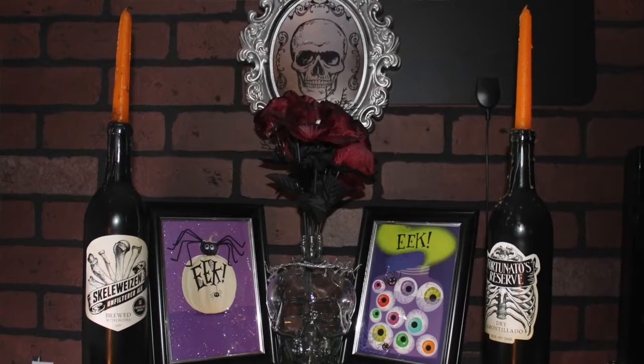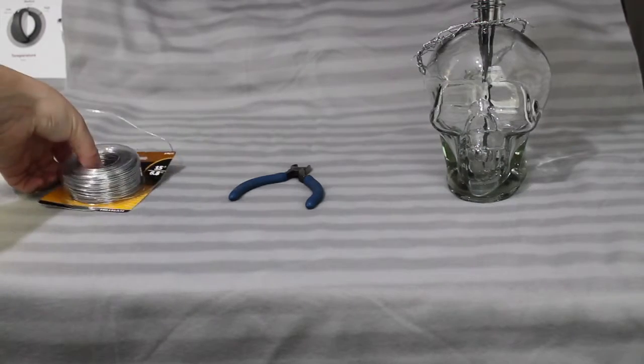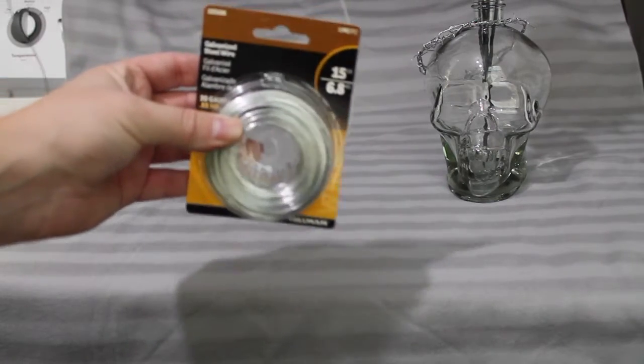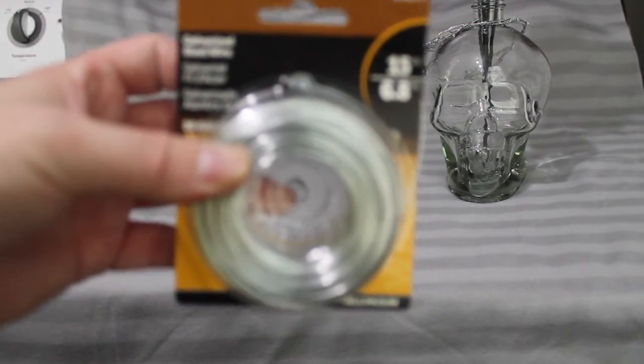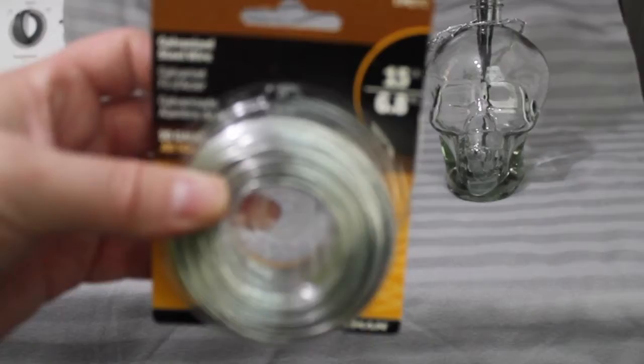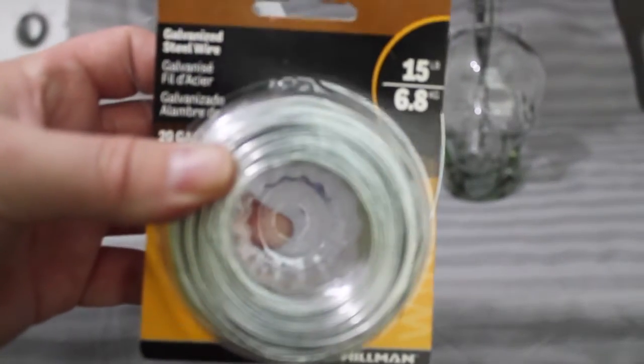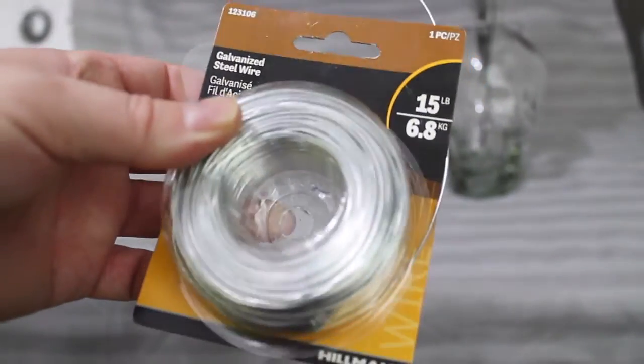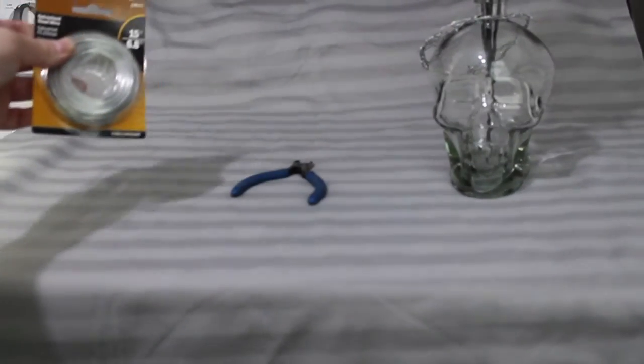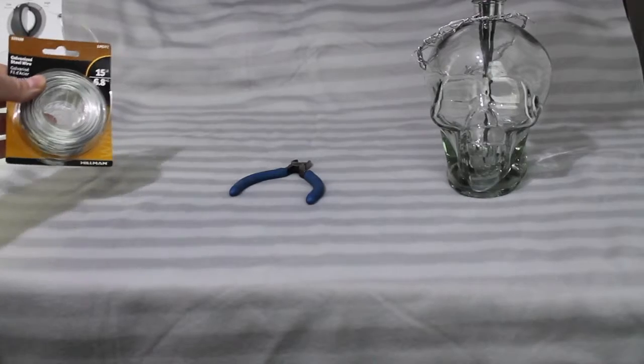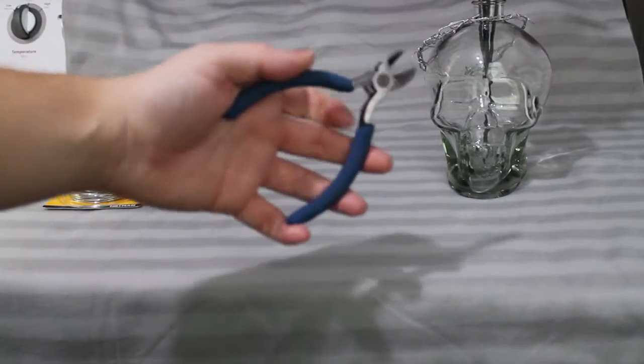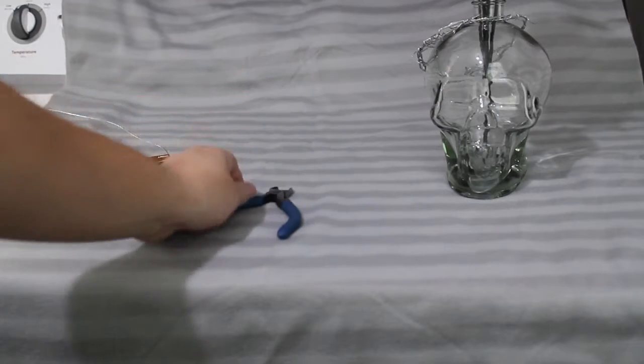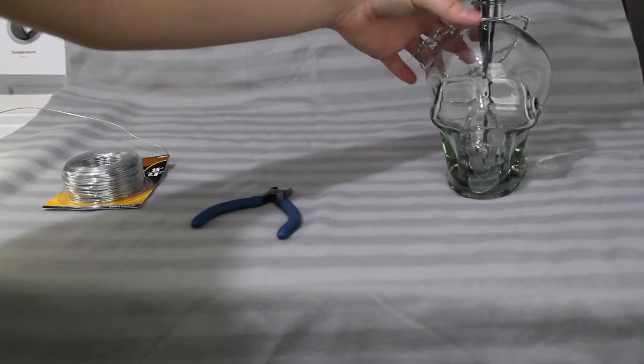Alright, let's get started with our first DIY. You're gonna pick up some wire that bends. I got mine from Walmart - it's a 20 gauge galvanized steel wire. You can get your wire anywhere, but mine was two dollars at Walmart. You can find this in the electrical section.